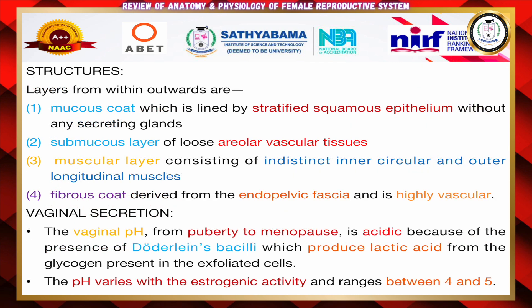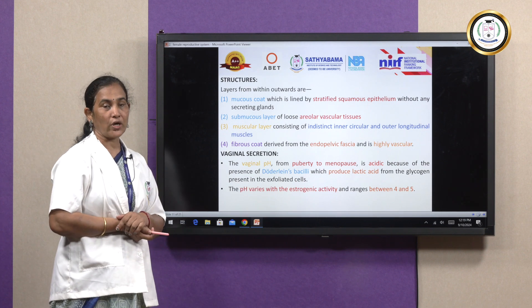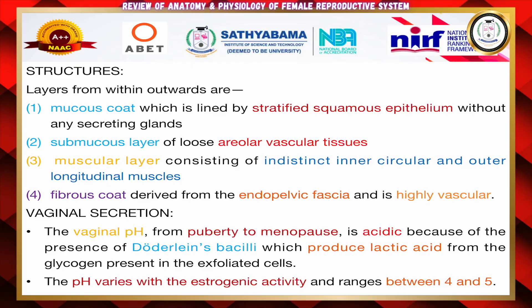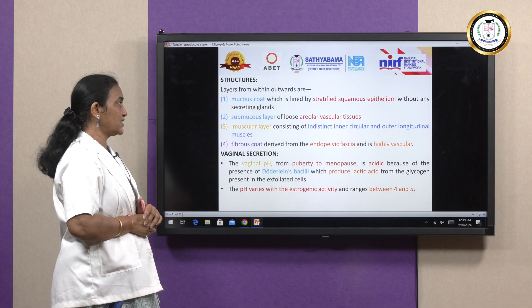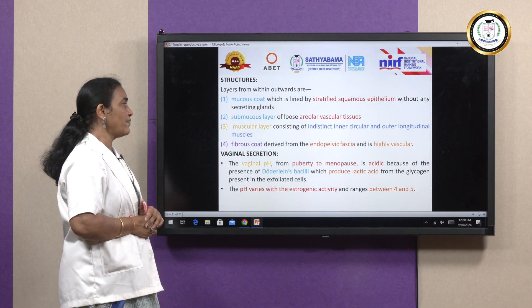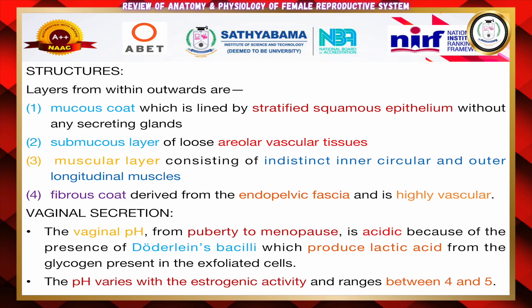The vaginal wall structures consist of three layers: the mucous coat, the submucous layer, and the muscular layer. The mucous coat is lined by stratified squamous epithelium without any secreting glands. The submucous layer consists of loosely attached areolar vascular tissue. The muscular layer consists of indistinct inner circular and outer longitudinal muscles. The fourth layer is the fibrous coat, which is derived from the endopelvic fascia and is highly vascular.